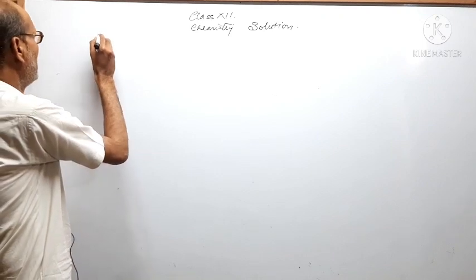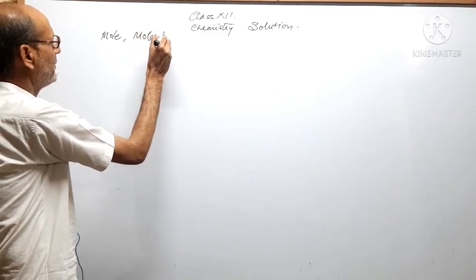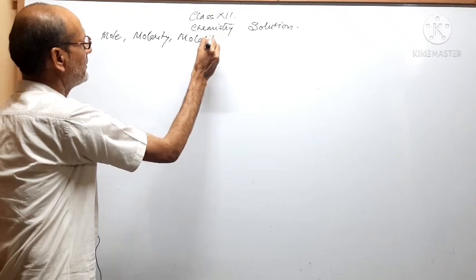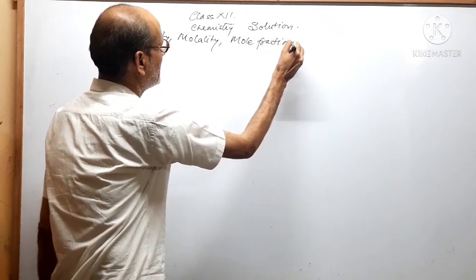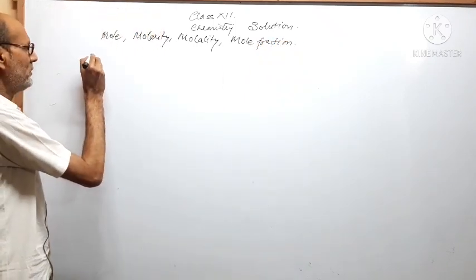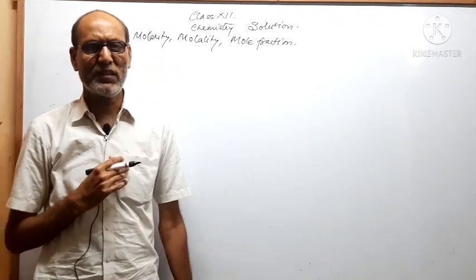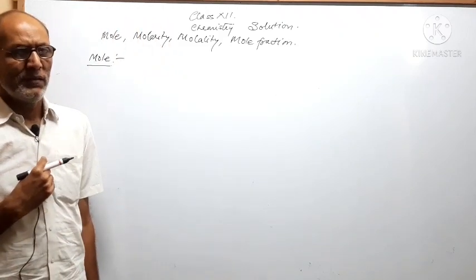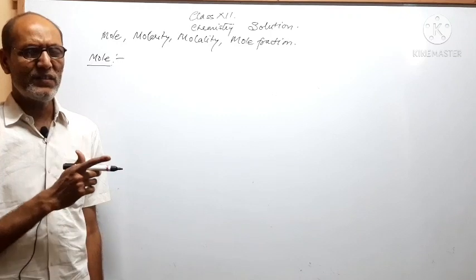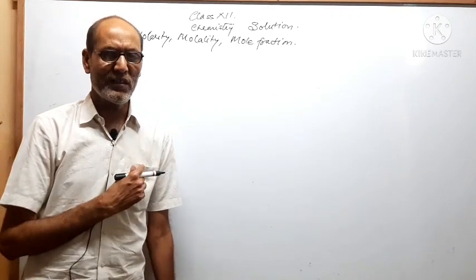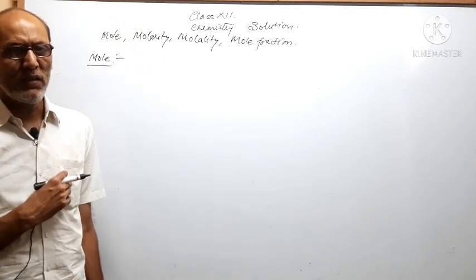First we will find the mole, then molarity, molality, and mole fraction. So first of all, what is the mole? As you know, in class you have studied about the mole — the amount of any substance which has equal entities as 12 gram carbon-12 contains will be called one mole of that substance.